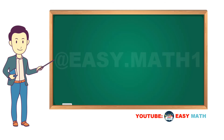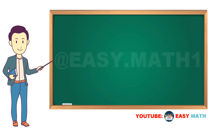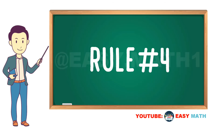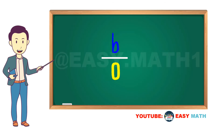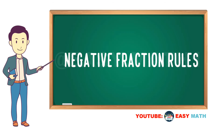For example, zero over one hundred is equal to zero. Rule number four: if we ever have zero in the denominator, all we can say is that the fraction is undefined.